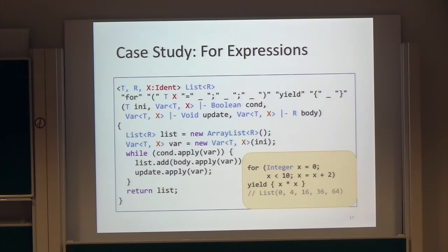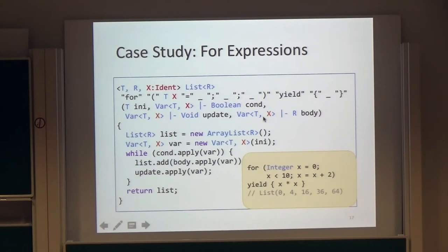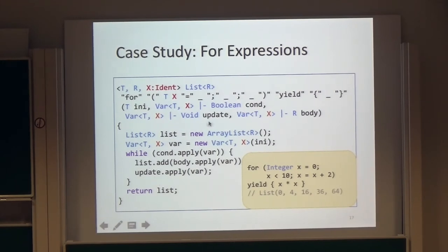The conditional expression, update expression, and iteration body each have a turnstile type: Ver T X turnstile boolean. So a variable X of type T is available at these operands. In the operator body, the parameters cond, update, and body take the same variable bar as argument, so the name X refers to the same variable.